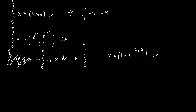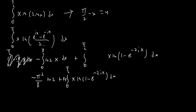We're only worrying about the real part. So this first integral on the left is going to contribute the first part of our answer: it's going to be −π²/8 · ln 2. And we're going to be adding the value of the real part of the integral from 0 to π/2 of x · ln(1 − e^(−2ix)) dx. So let's go ahead and solve that.